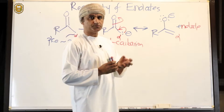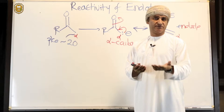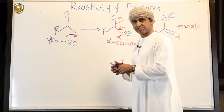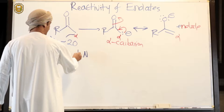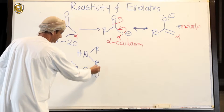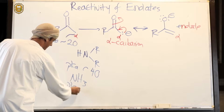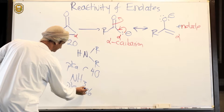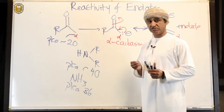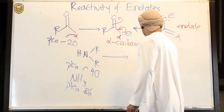What substances have a pKa higher than 20? You can think of amines. The pKa of ammonia is 36, and the pKa of amines in general is about 40. If we want to use a strong base to remove that proton, the conjugate base of the amine — the amide ion — is formed.